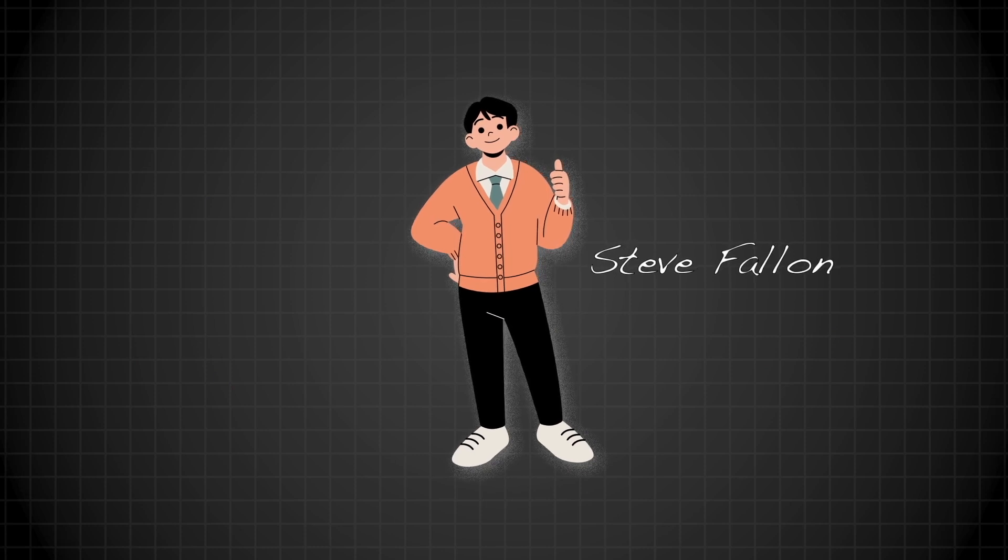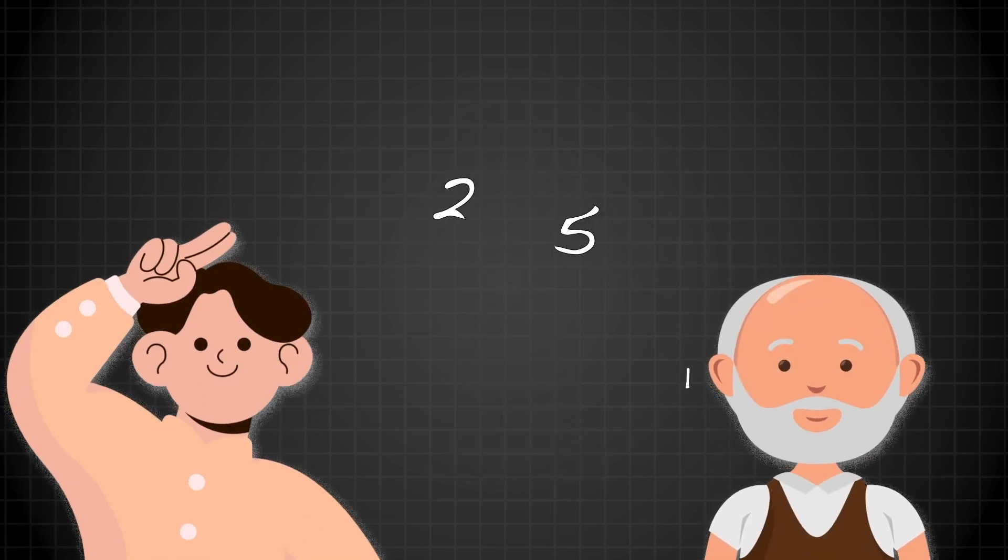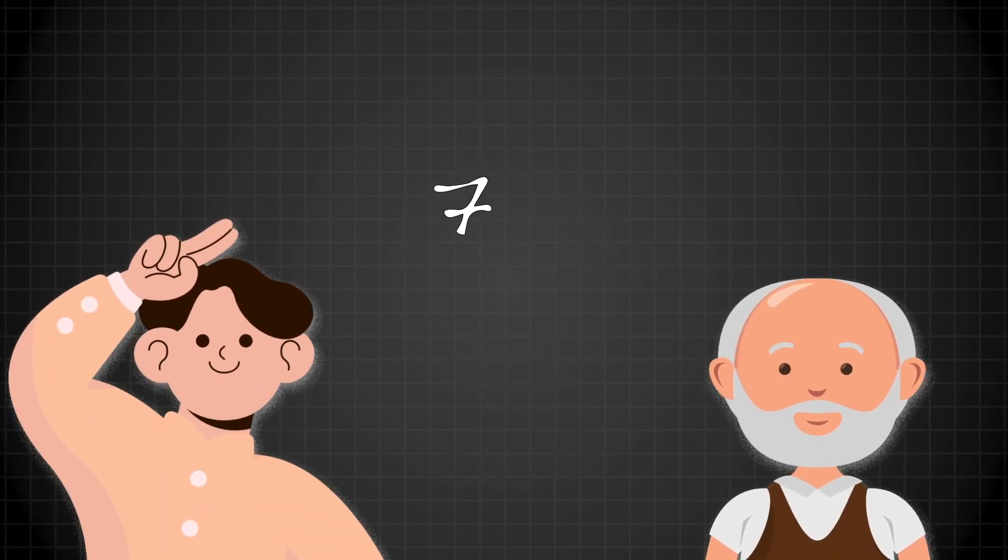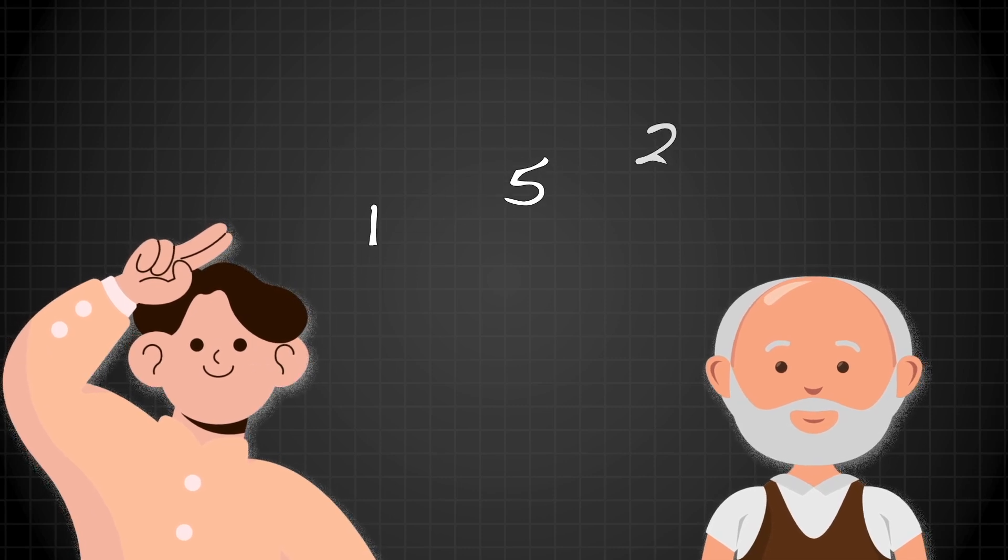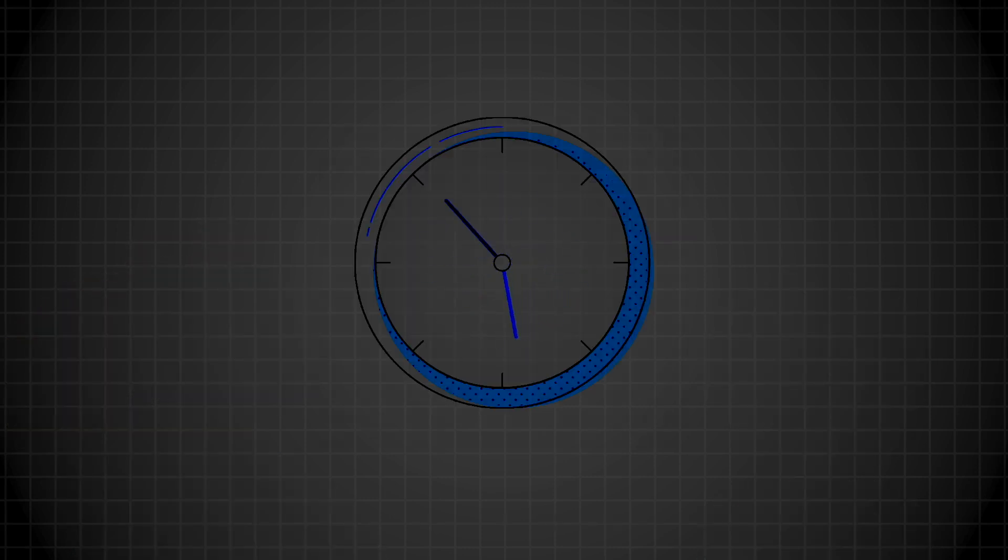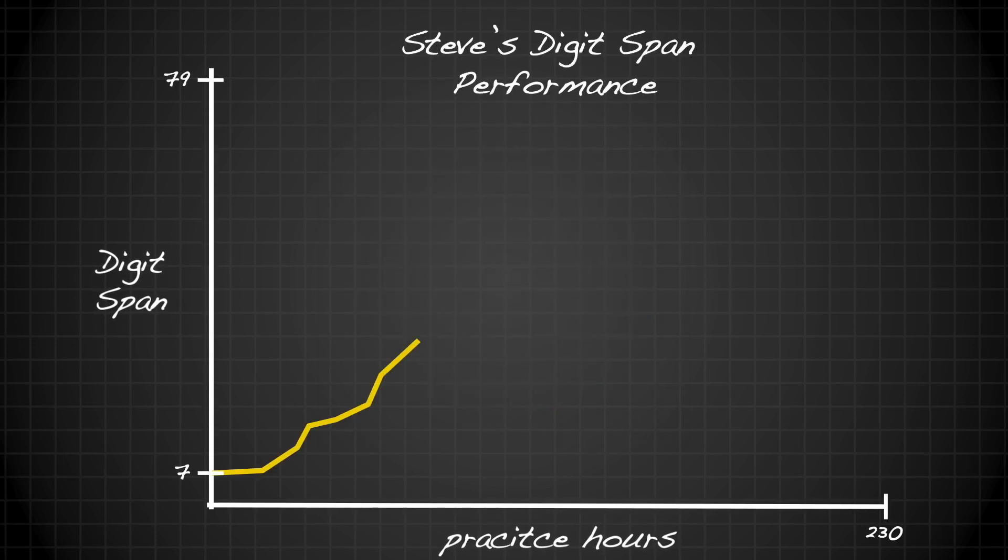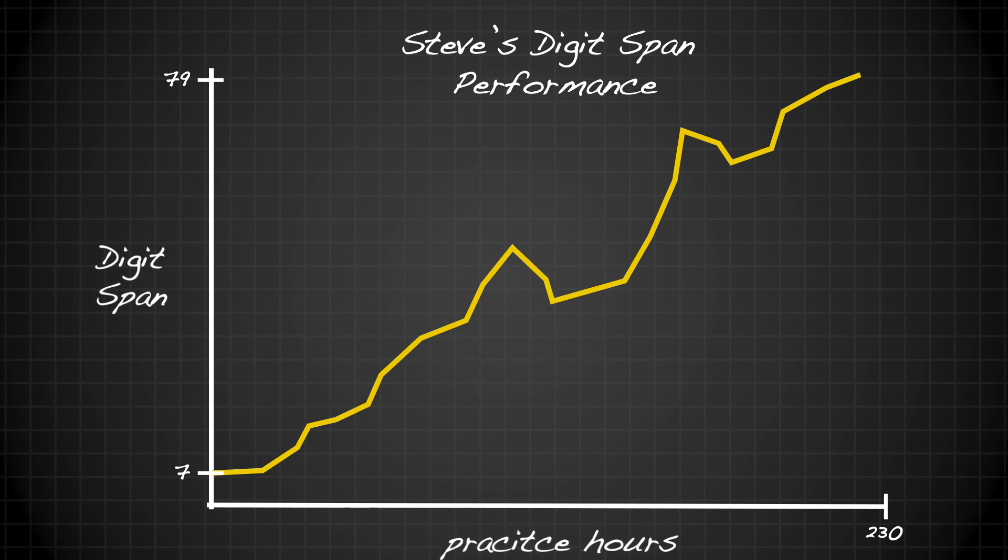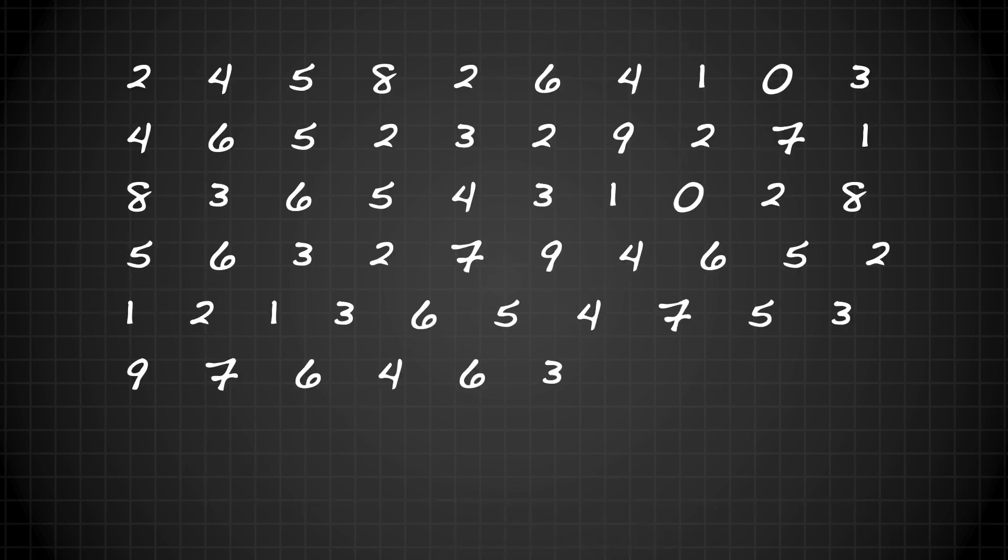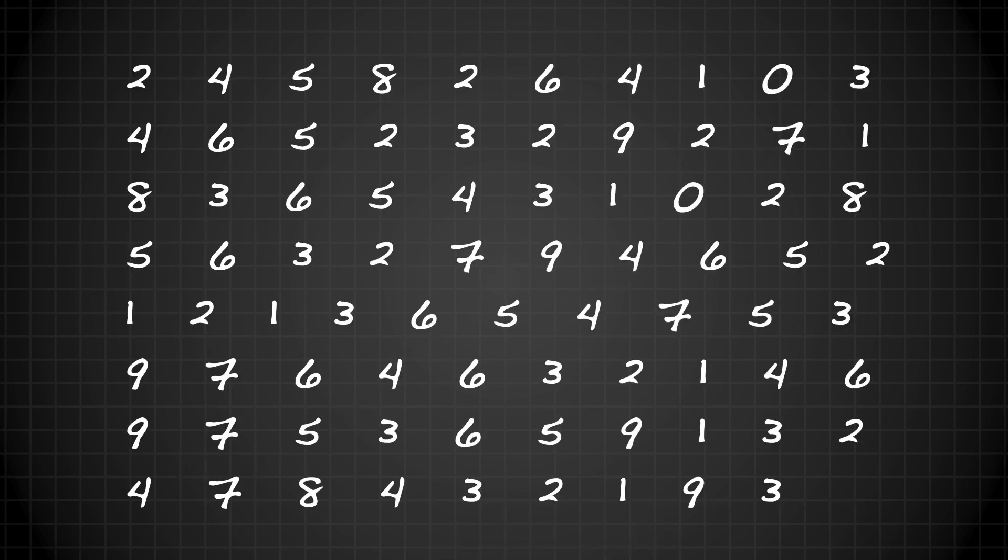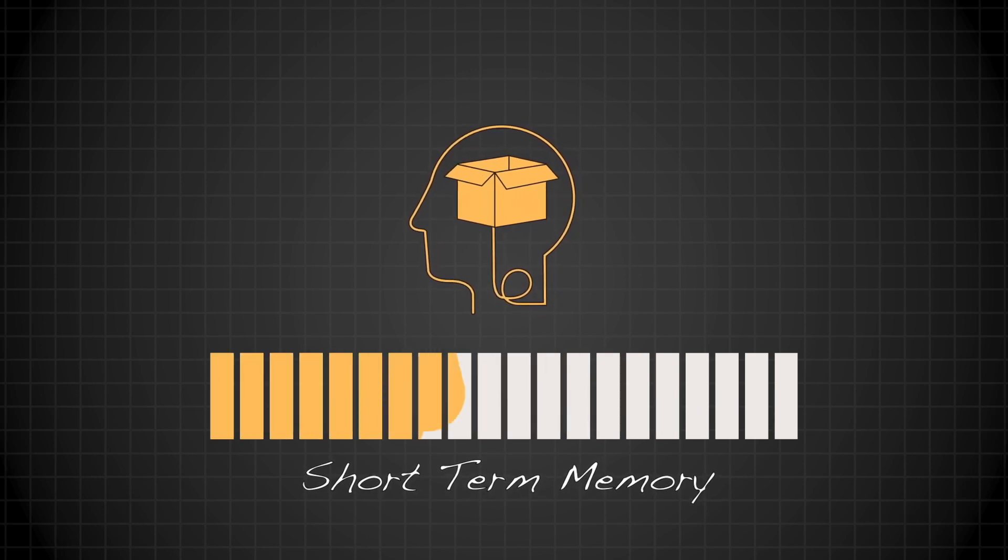Oh, and Steve Fallon from earlier in the video. Well, he continued to visit Ericsson's lab for the next year and a half. And during that time, he started changing his practice techniques. After more than 230 hours of practice, Steve's ability to store digits in his short-term memory went from just seven digits to 79 digits. By the way, this is 79 digits. Steve's short-term memory skills were on par with some of the best known memory experts of the time. And 230 hours was a relatively short amount of time to reach that level of expertise.